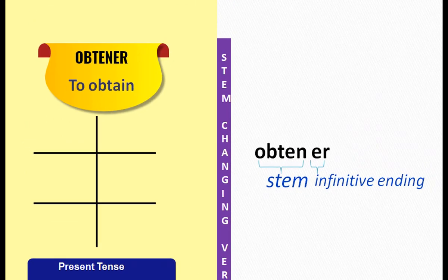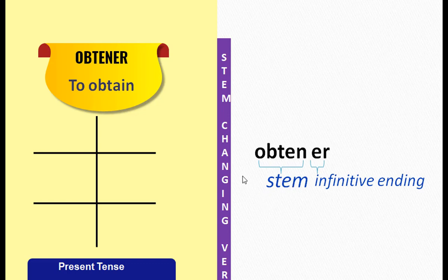The next verb is OBTENER, which means 'to obtain.' If we break this verb into two parts: we have the -ER infinitive ending, and the rest of the verb OBTEN forms the stem. As discussed in previous chapters, if we have a three-syllable verb, it is the second syllable that undergoes the stem change.